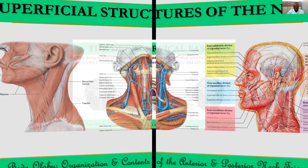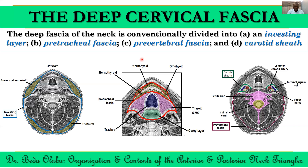Going deep, the neck has several deep fascial systems. The investing fascia covers the whole of the neck but encloses some muscles: sternocleidomastoid and trapezius. The pre-tracheal fascia encloses the thyroid gland together with the trachea and esophagus. We have the pre-vertebral fascia, which encloses the muscles around the vertebral column including also the brachial plexus. Then we have the carotid sheath, which encloses the common carotid artery, internal jugular vein, and vagus nerve — a union of the other three deep cervical fascial systems.